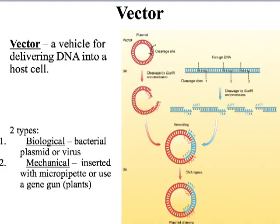A vector is something that we use to deliver DNA into a host cell. A bacterial plasmid is an example of a vector. So when we want bacteria to be able to make insulin, we use the vector of a bacterial plasmid, and we make a recombinant bacterial plasmid. Then we stick it back into the bacteria, and when the bacteria reproduces, it produces that insulin that we want it to produce.